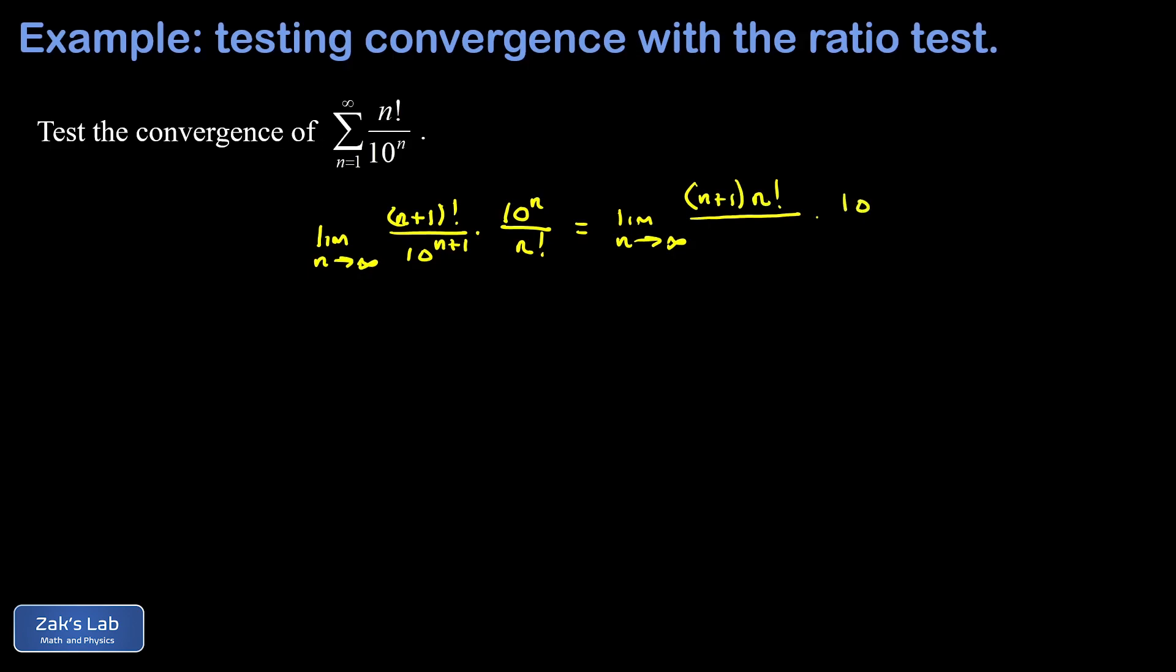And then in the denominator, instead of 10 to the (n+1), I'm going to write 10 to the n times 10, and then the n factorial is left alone. So now things start to cancel out.